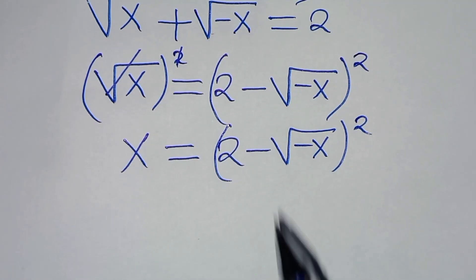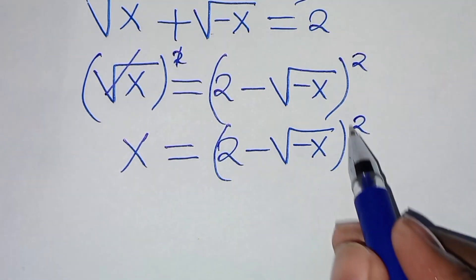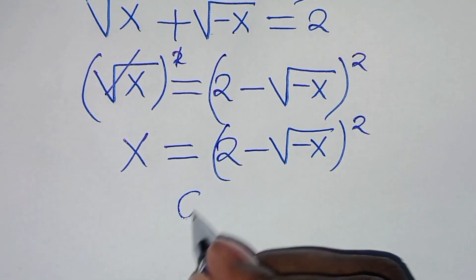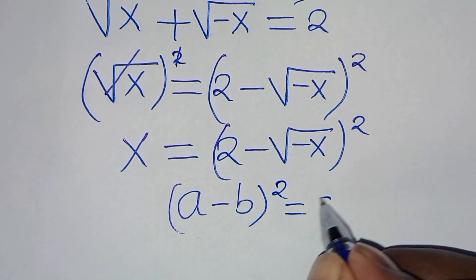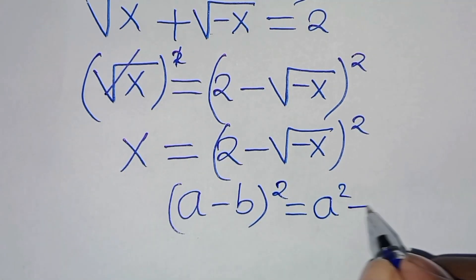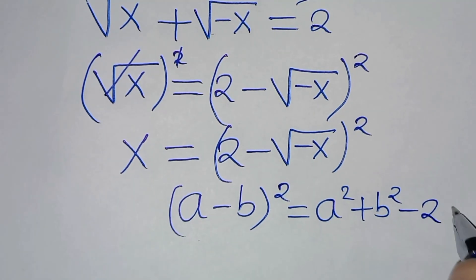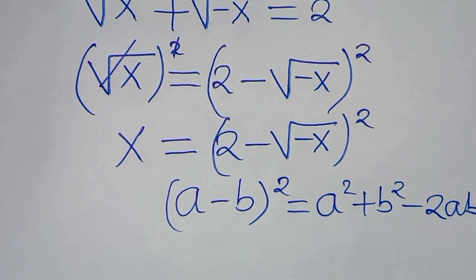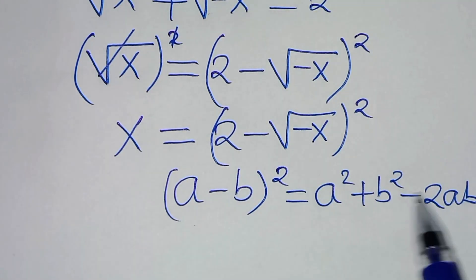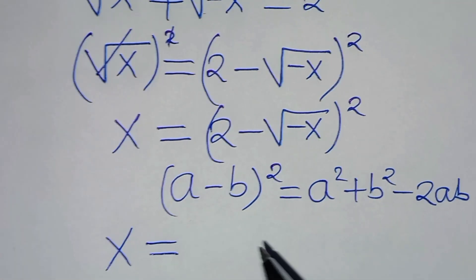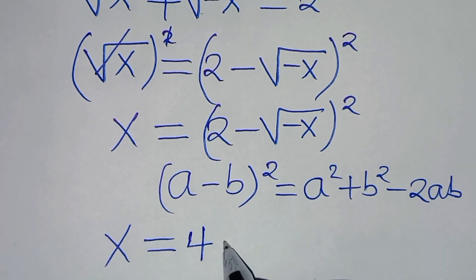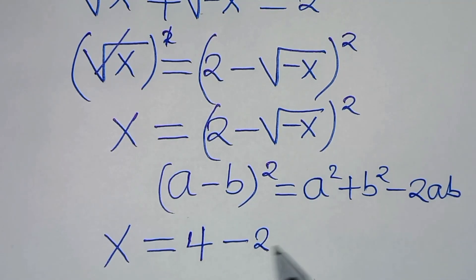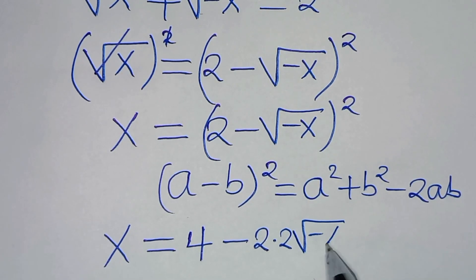This implies that 2 minus square root of minus x squared is in the form of a minus b squared, which we can express as a squared plus b squared minus 2 times ab. Applying this algebraic identity, then x is equal to 2 squared, which is equal to 4, minus 2 times 2 times square root of minus x squared.